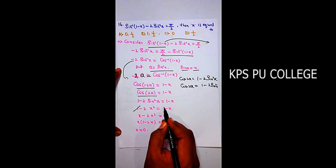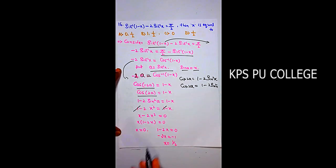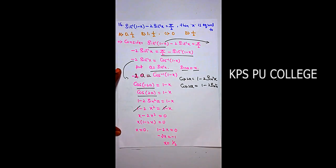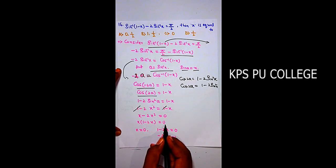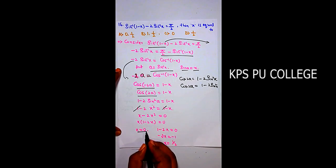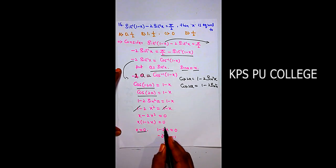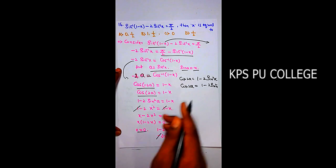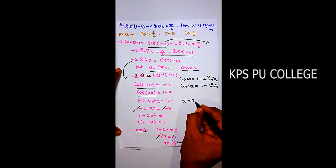The 1s cancel, giving x - 2x² = 0. Factoring: x(1-2x) = 0, so x = 0 or x = 1/2. We need to verify both solutions in the original equation.